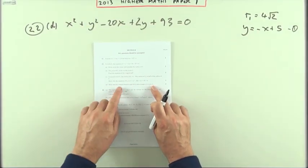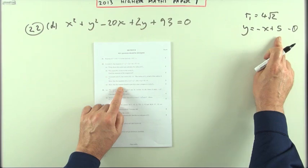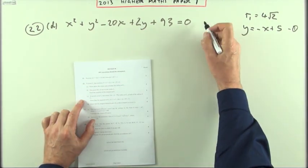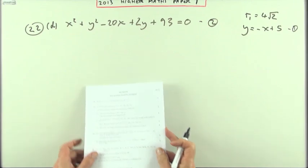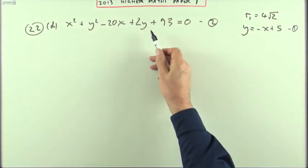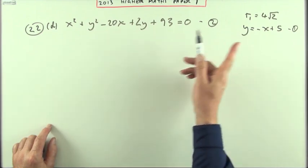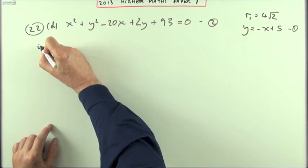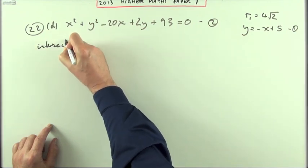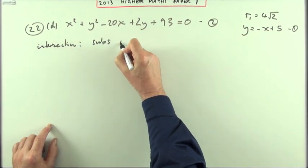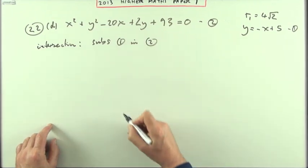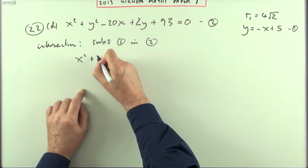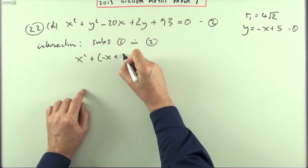Then for part d, show the tangent found in part 1, I've kept it over here, is also tangent to the circle c2 you found in the previous part, so that's the circle, we'll call that equation 2, show it's a tangent, that means show it touches it only once, there's only one solution to the substitution, so if I'm looking for a tangent, I'm essentially looking to see what kind of intersection there is, and to do that, I'm going to substitute one equation in the other, in other words, wherever I see y, I'm going to write negative x plus 5.